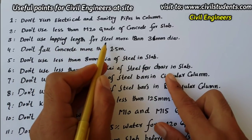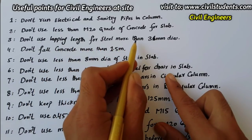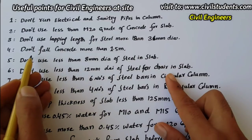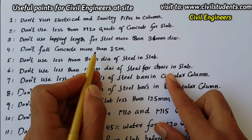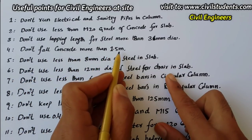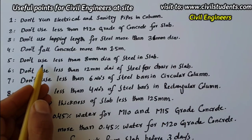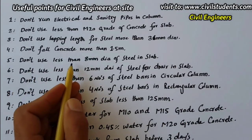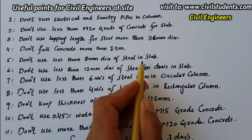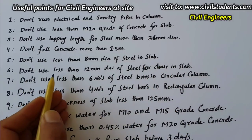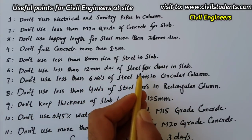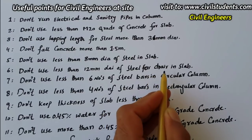The third point: don't use a lapping length for steel more than 36mm diameter. Don't pour concrete from more than 1.5 meters height. And don't use less than 8mm diameter of steel in a slab.